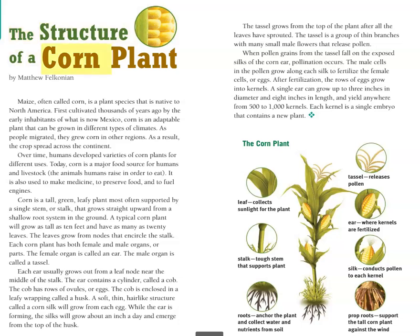Structure of a Corn Plant by Matthew Falconian. Maize, often called corn, is a plant species that is native to North America. First cultivated thousands of years ago by the early inhabitants of what is now Mexico, corn is an adaptable plant that can be grown in different types of climates.